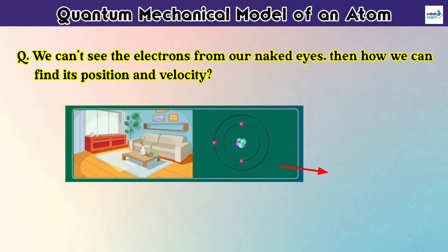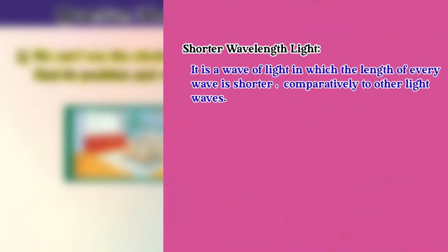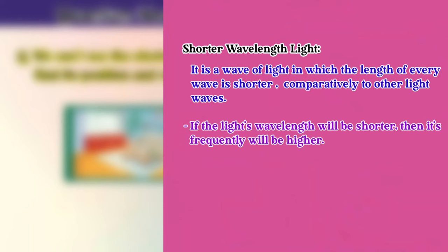So for this, we can use a shorter wavelength light to find the electron position in an atom. Now what is a shorter wavelength light? So it is the light waves in which the length of every wave is shorter comparatively to other light waves. And as its wavelength will be shorter, its frequency will be higher, because more number of waves will be passing from the given point per second.